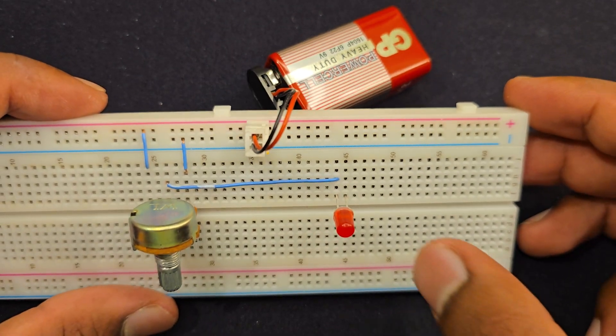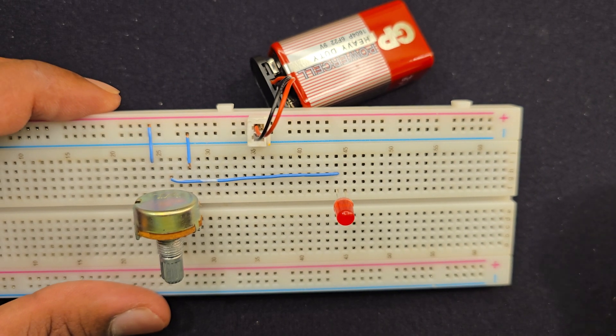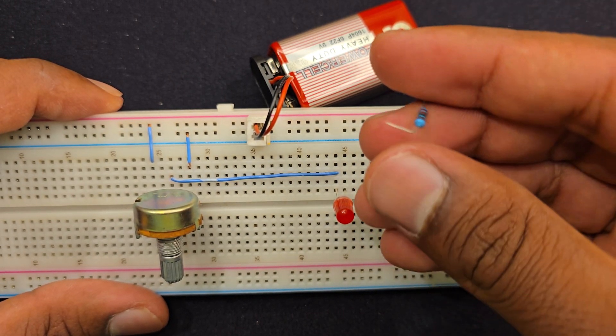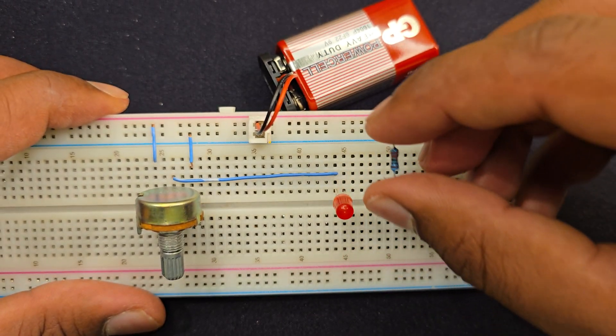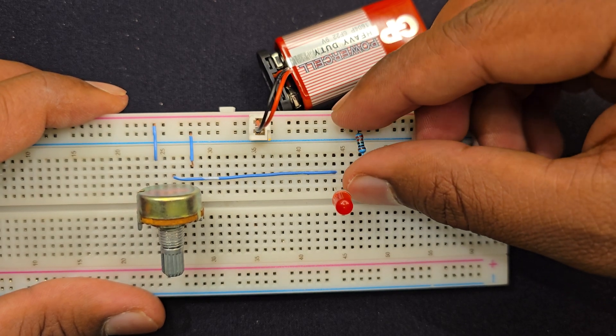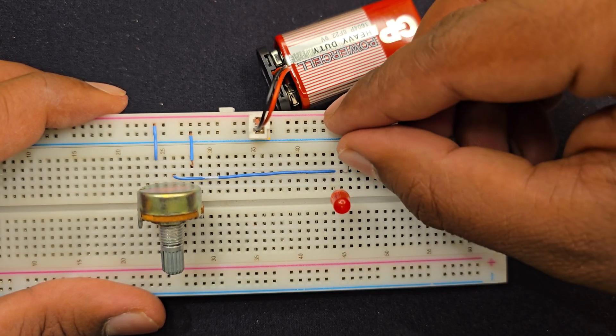And the short one, the small one, I'm connecting to the negative rail using a 220 ohm resistor. Like that.